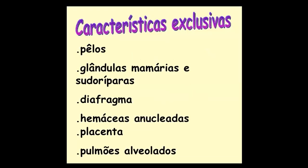Qual é a característica exclusiva dos mamíferos? São os pelos e as glândulas mamárias — por isso se chama mamífero. Todos têm glândulas mamárias e pelos. Além das glândulas mamárias, eles têm glândulas sudoríparas e glândulas sebáceas. O diafragma é um músculo que separa o tórax do abdômen e ajuda nos movimentos respiratórios. Isso também é exclusivo de mamífero — nenhum outro vertebrado tem diafragma.